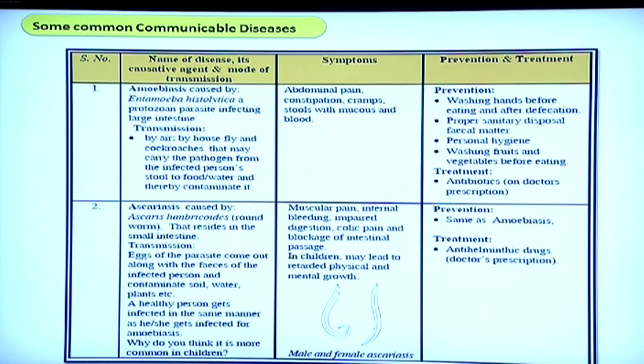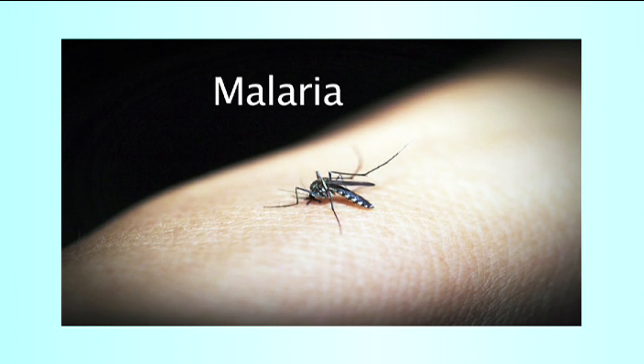Malaria is common during the rainy season. The mosquito is the vector carrying the pathogen, which is a protozoan. The female Anopheles mosquito sucks blood from an infected person and then transfers the pathogen to a healthy person when it bites again. Prevention requires controlling the spread of mosquitoes. Elephantiasis is caused by a roundworm that lodges itself in the lymphatic ducts, obstructing fluid passage and causing enormous swelling of the legs. Dengue is another mosquito-borne disease that can become dangerous if not treated in time.